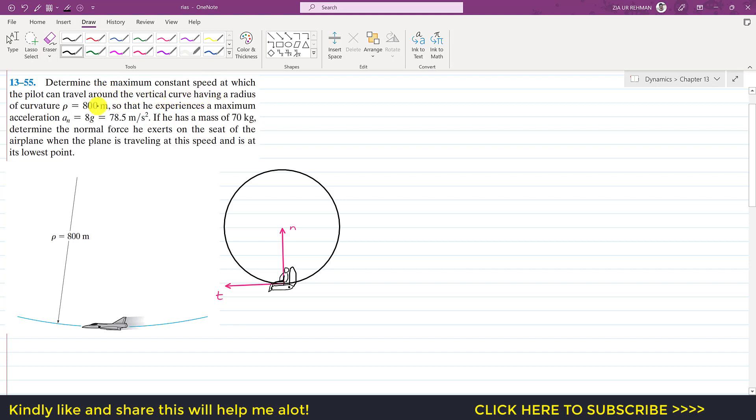Having a radius of 800 meters so that he experienced a maximum acceleration. The normal acceleration is equal to 78.5 meter per second squared. If he has a mass of 70 kg, determine the normal force he exerts on